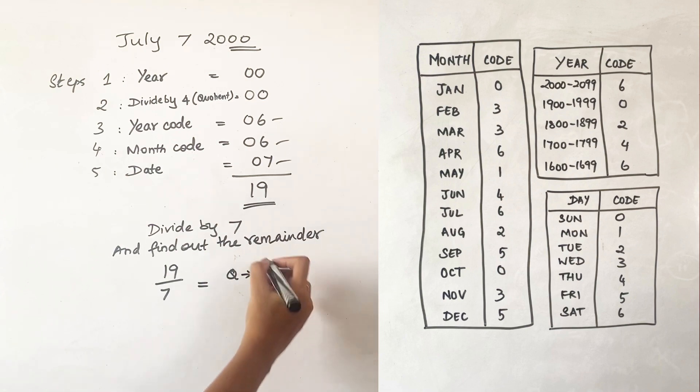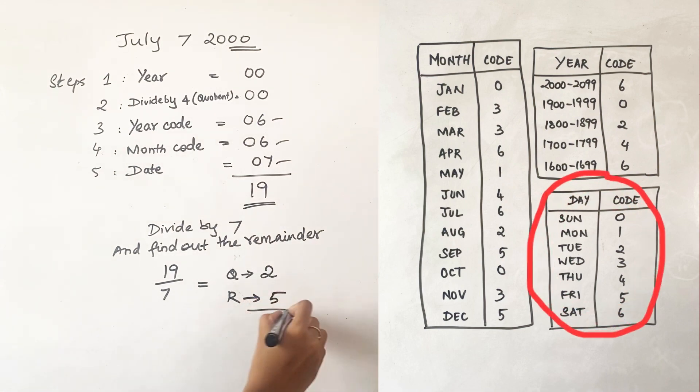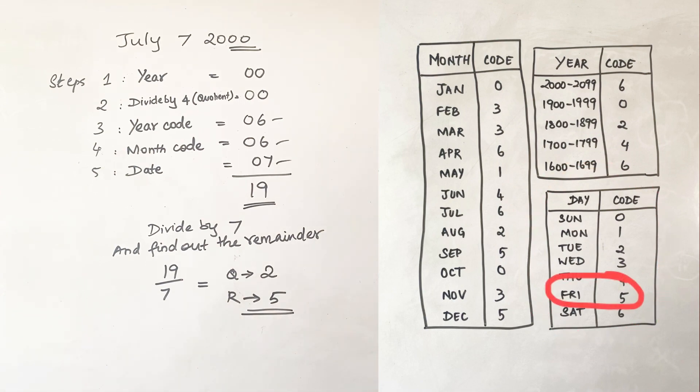Now we know that 7 twos are 14, so the quotient is 2 and the remainder is 5. Now this number is your final answer. Check this number with the code box that I've given. 5 is Friday, so your answer is Friday. July 7, 2000 is a Friday.